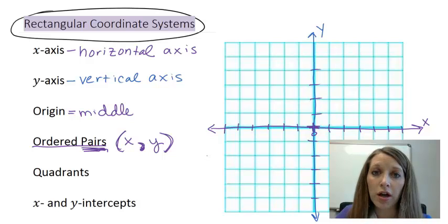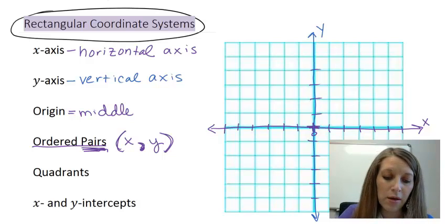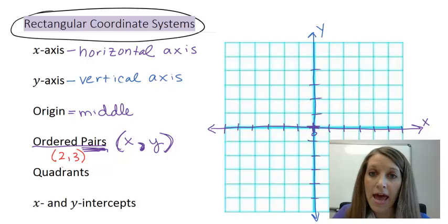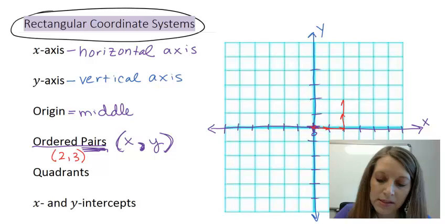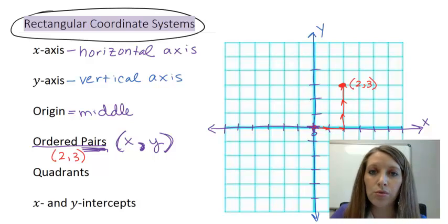Let me draw a couple examples here for you. Let me draw the ordered pair of 2, 3, where my x-coordinate is 2. So I start at my origin and I count right two units. And then my y-coordinate is 3. So from that place, I count up three units. And that gives me my point or my ordered pair there, which is (2, 3), with parentheses around it.